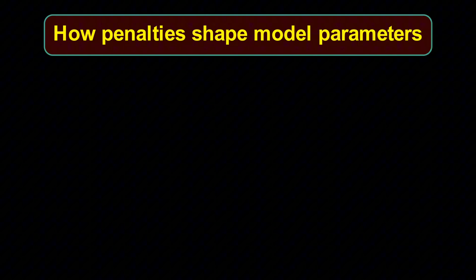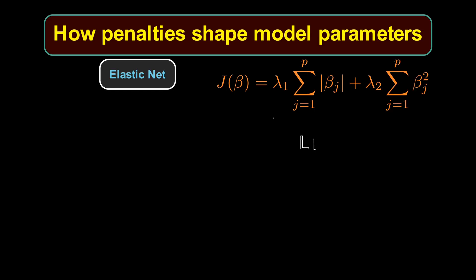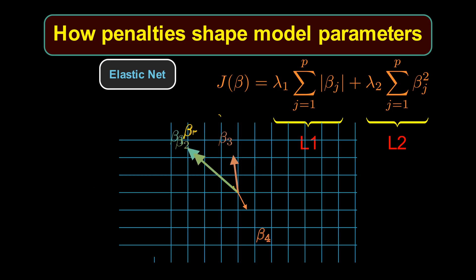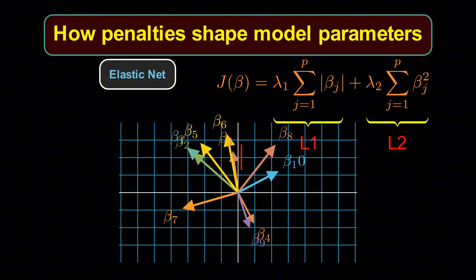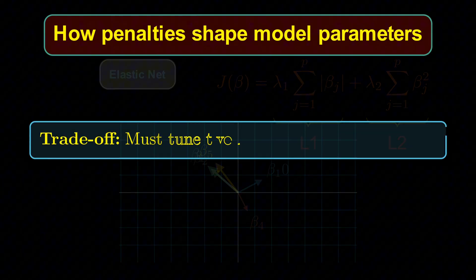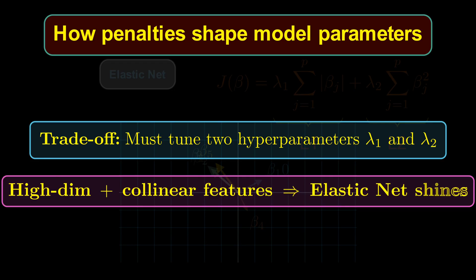We can also combine the two penalty terms to make what we refer to as the elastic net. Here, the penalty is a combination of both L1 and L2 terms. This method balances the strengths of ridge and lasso. It can select groups of correlated variables together while also promoting sparsity. The trade-off: You must tune two hyperparameters, lambda1 and lambda2. But when data sets are high-dimensional and features are correlated, elastic net is often the most robust choice.